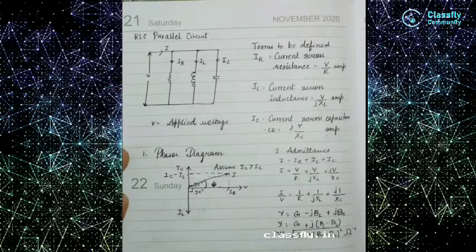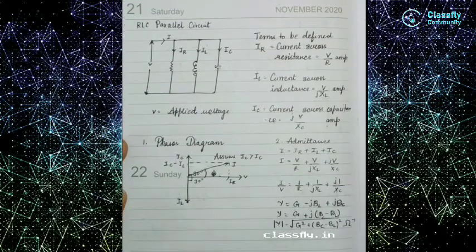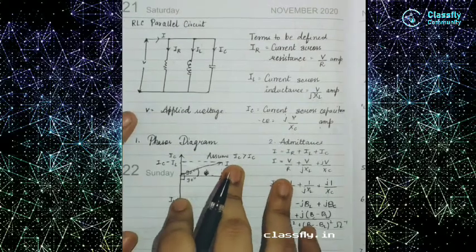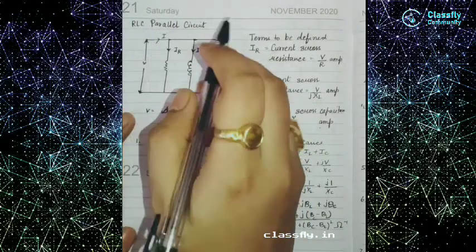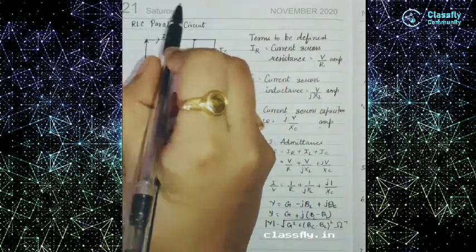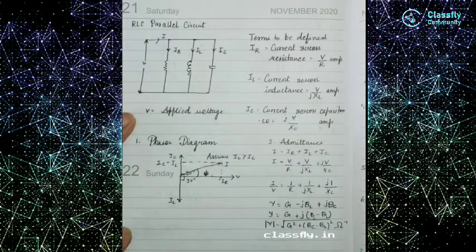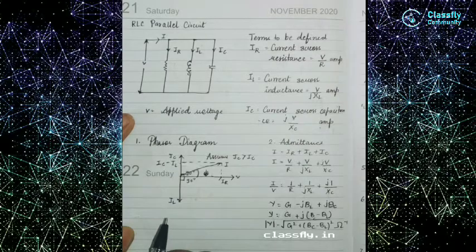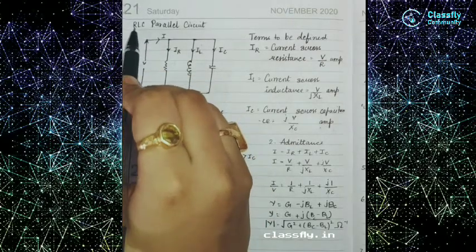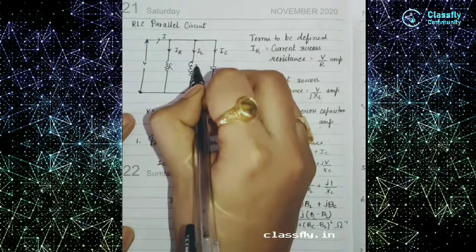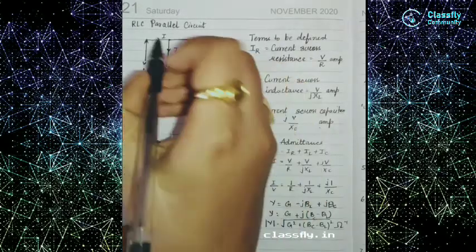Welcome to our channel. Today we will be doing the topic of the RLC parallel circuit. We know that in a parallel circuit the current starts dividing at every junction. Here we will be dealing with three main components: resistance, inductance, and capacitor.